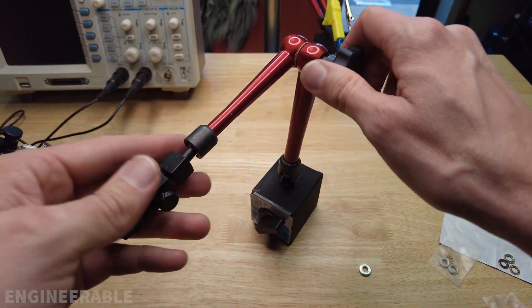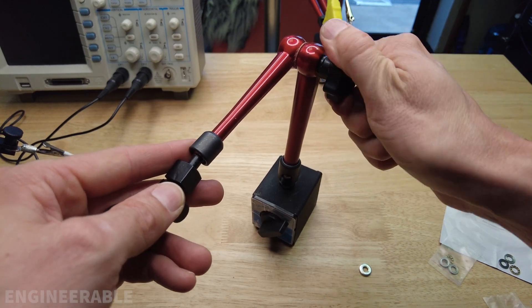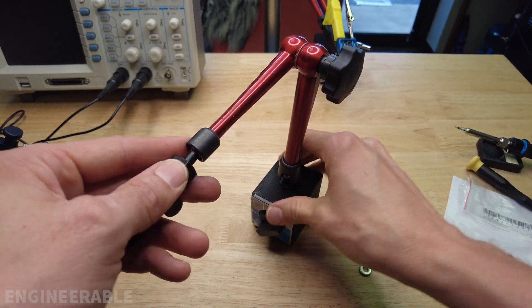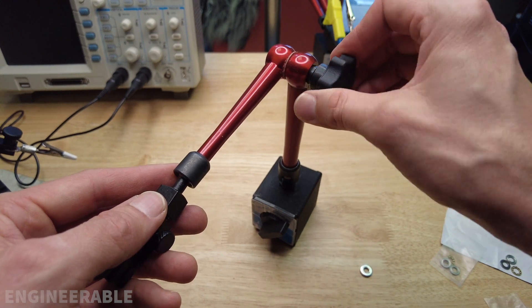Another nice thing about the thrust bearing is that it allows you to much more easily tighten it so it's super rigid, and you can fine tune the tightness a lot better.